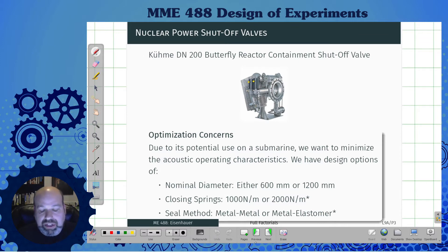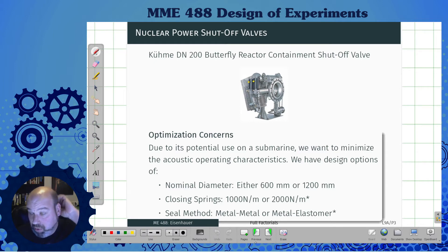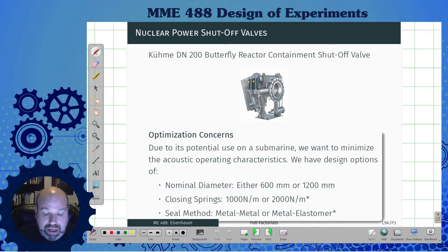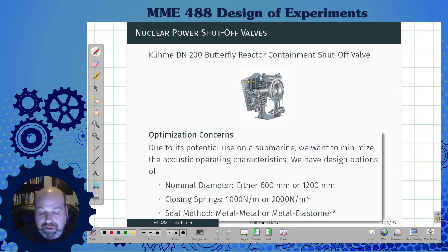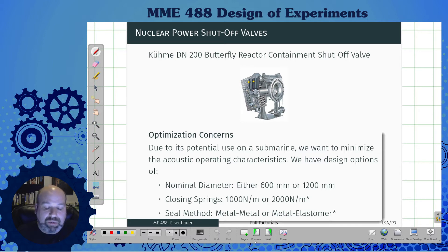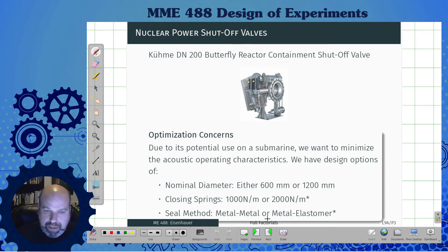Because we might want to use this valve on a submarine, we want to minimize acoustic operating characteristics. We want to discover through experimentation what makes good acoustic conditions for this device. We have three design options: diameter (600mm or 1200mm), closing springs (1000 or 2000 N/m), and seal type (metal-on-metal or metal-on-elastomer plastic). We'll use this example throughout the factorial design lectures.